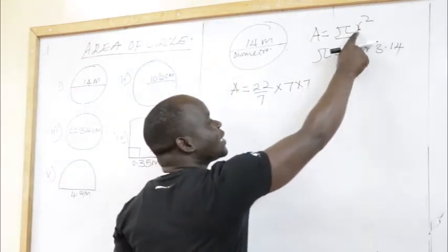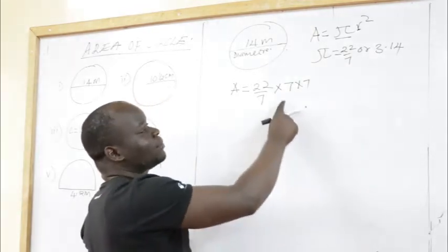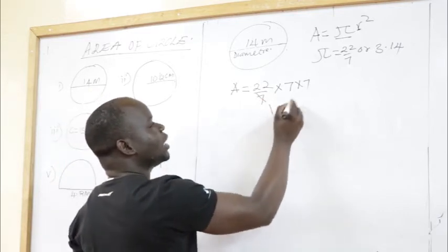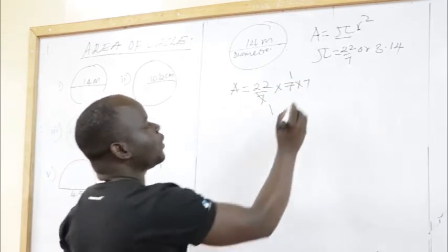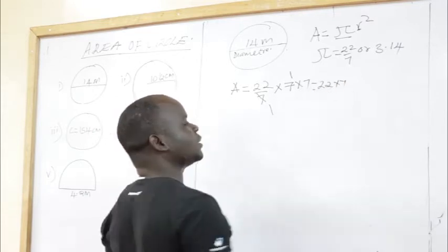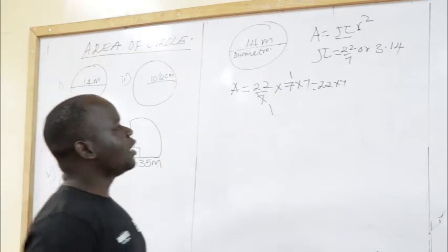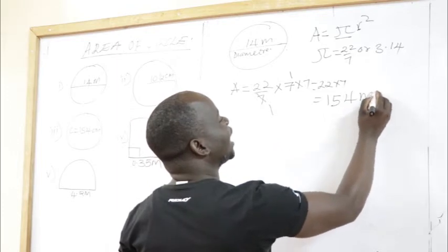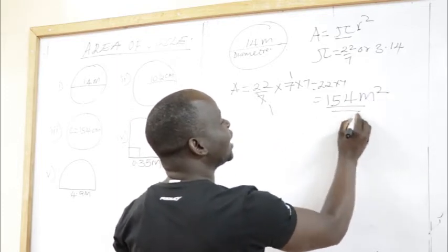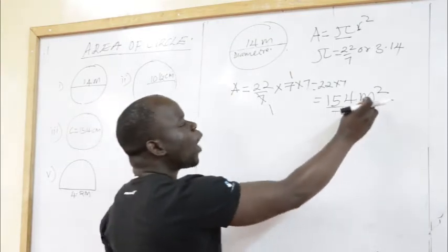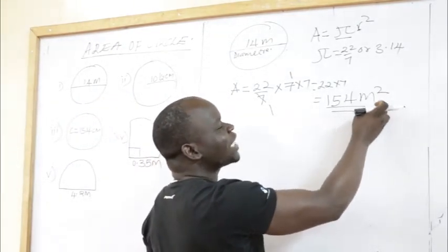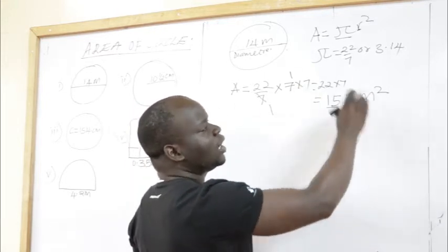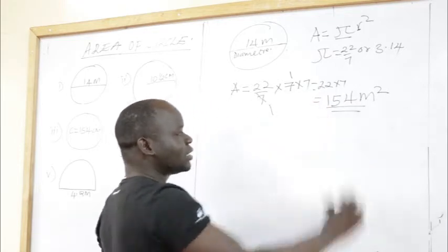The area of that figure is given by π r² = 22/7 × 7 × 7. We write 7 twice because r squared means r times itself. The 7s cancel with the denominator 7, leaving 22 × 7 = 154 meter squared. Remember: when you give your answer for area, you must include the square unit — otherwise your answer is wrong.